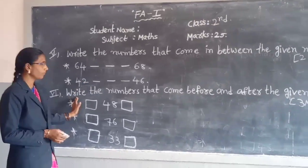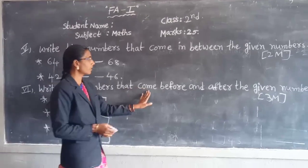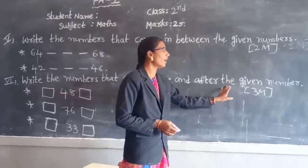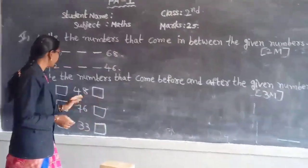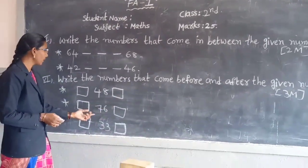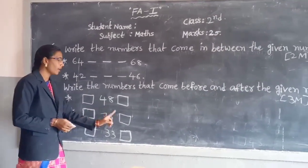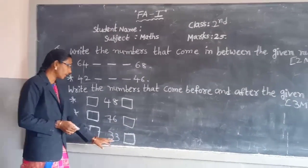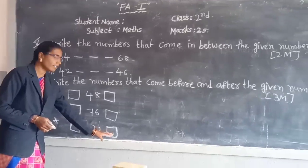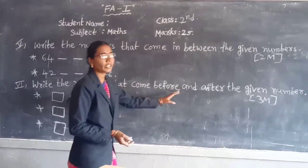Next, sixth bit: write the numbers that come before and after the given number. 48 — write the before number and after number. Next, 76 — write the before number and after number. Next, 33 — write the before number and after number. Sixth bit, 3 points.